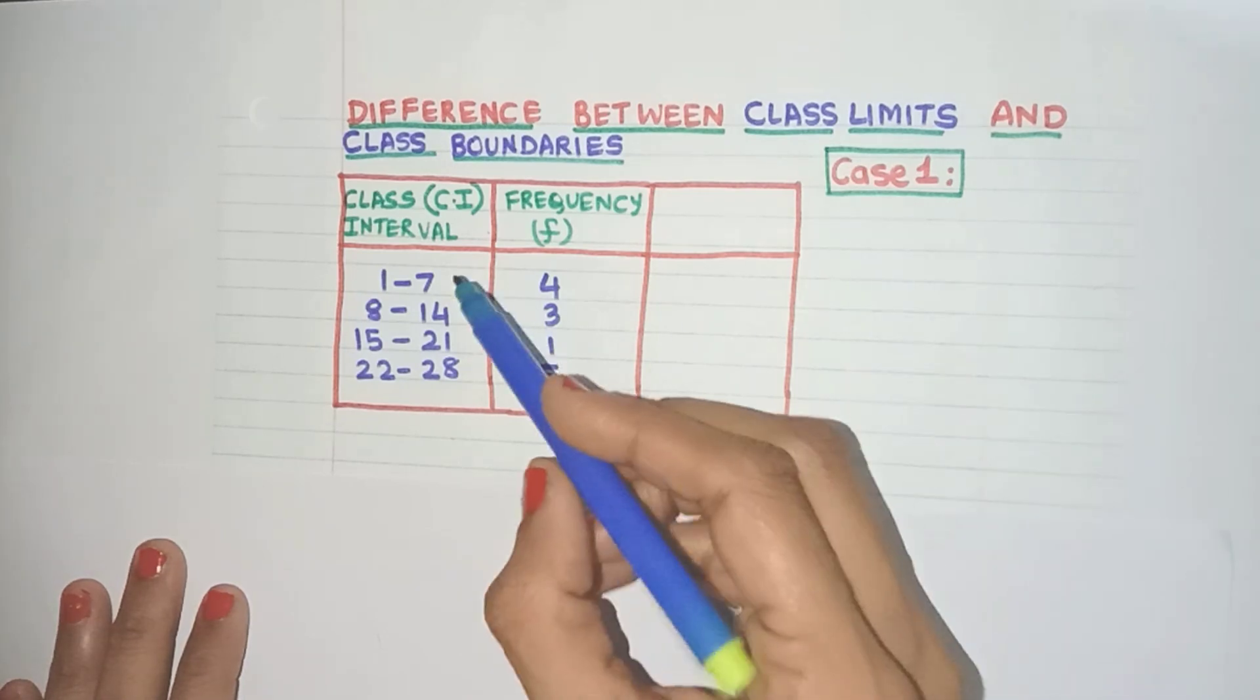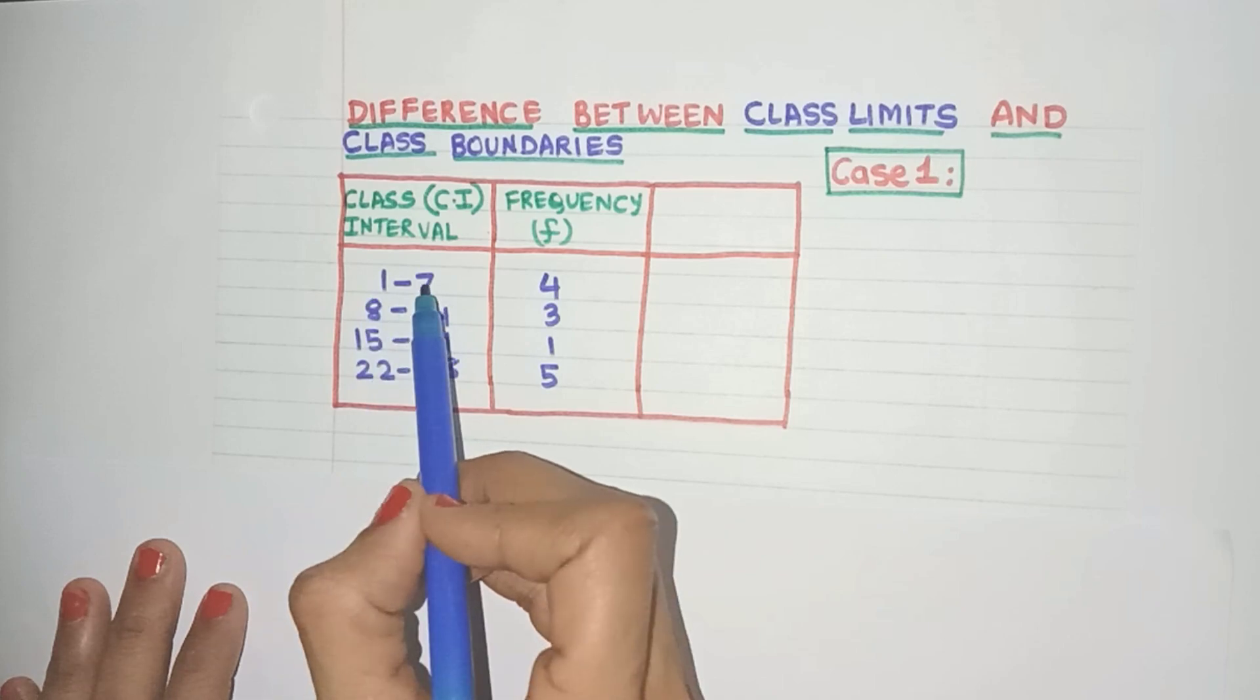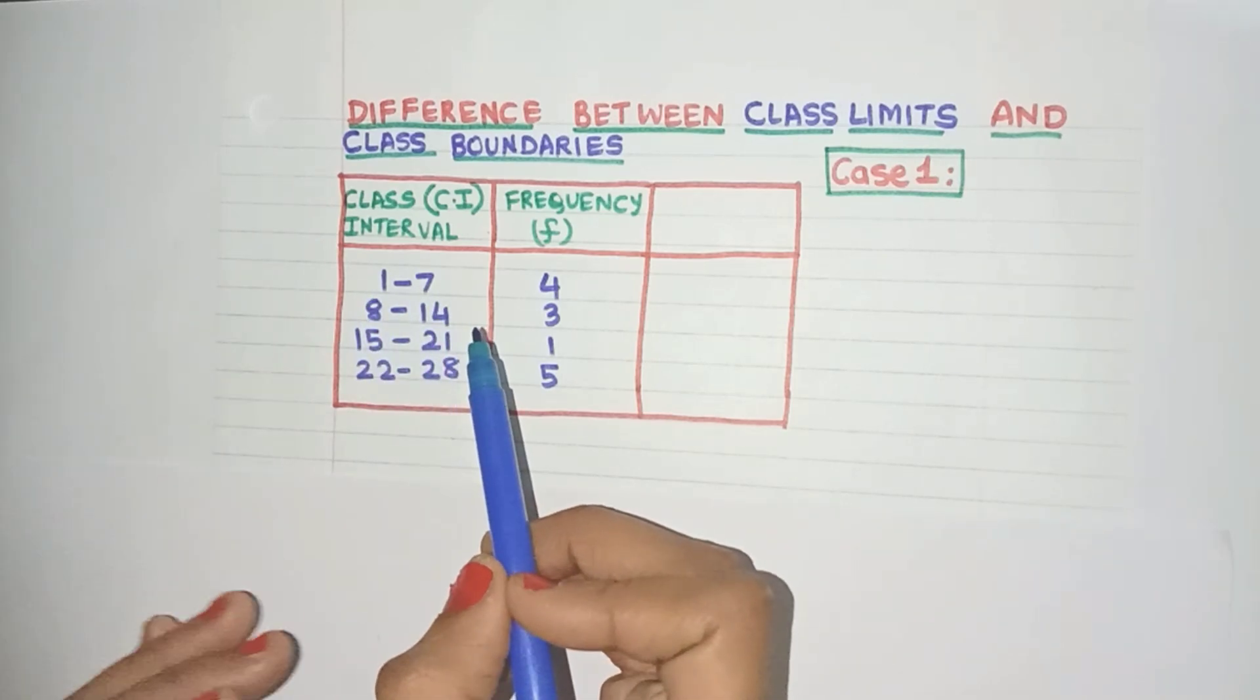So let's take the first case. These are the class intervals, these are the frequencies. Now we have class intervals 1 to 7, 8 to 14 and so on.